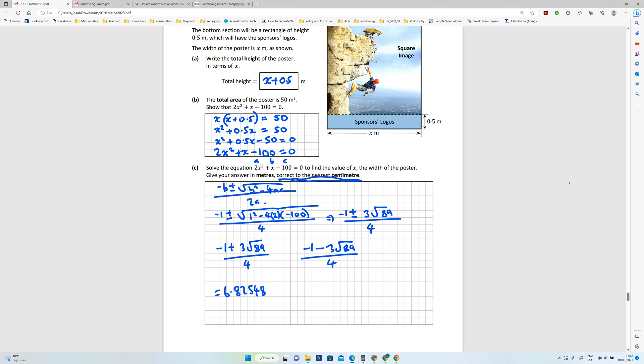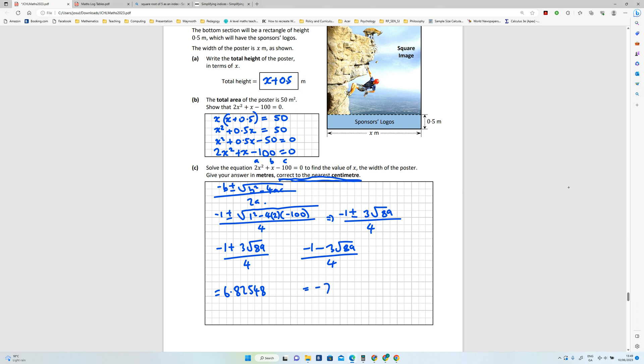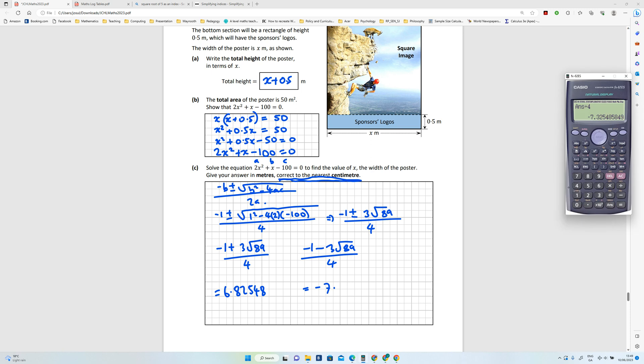So the other one is probably going to be negative, but I'll make sure because I've made a mistake along the way. 89, well done. Minus one, minus three root of 89, divided by four is equal to minus seven point three two five.